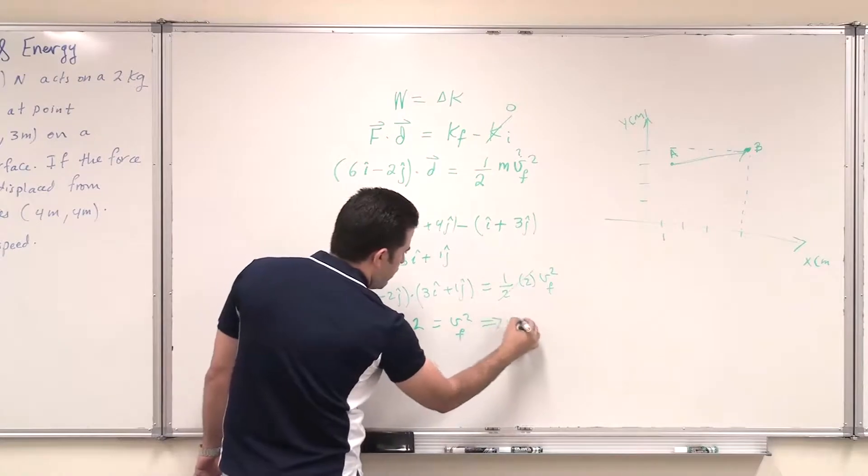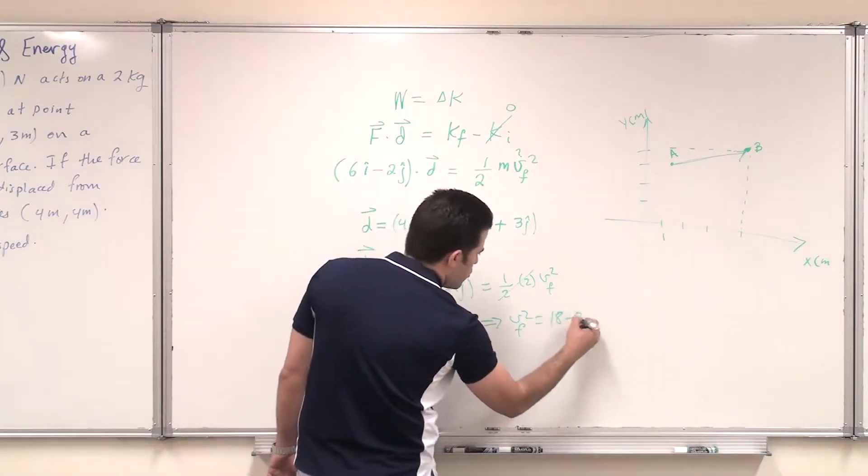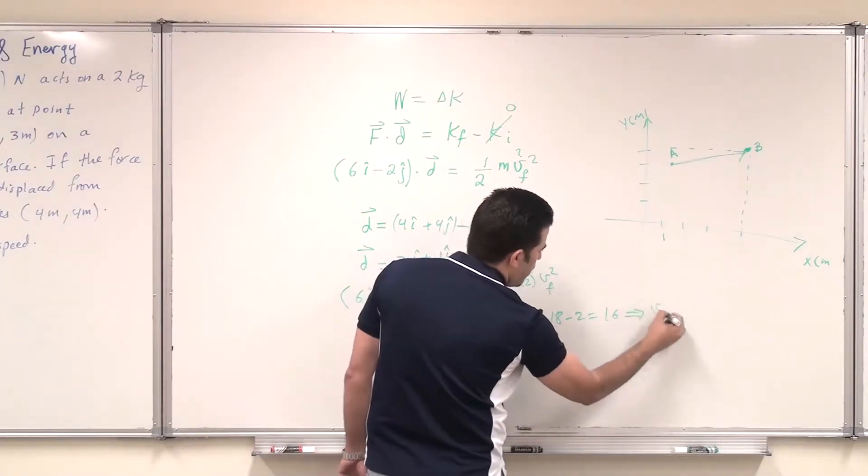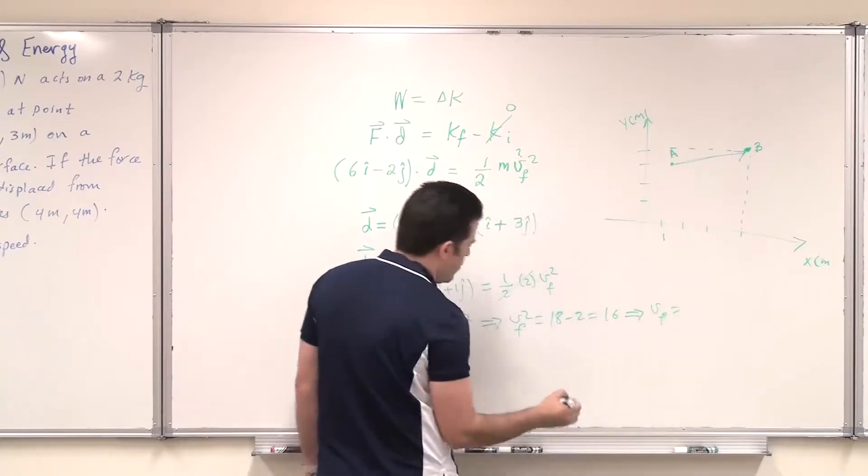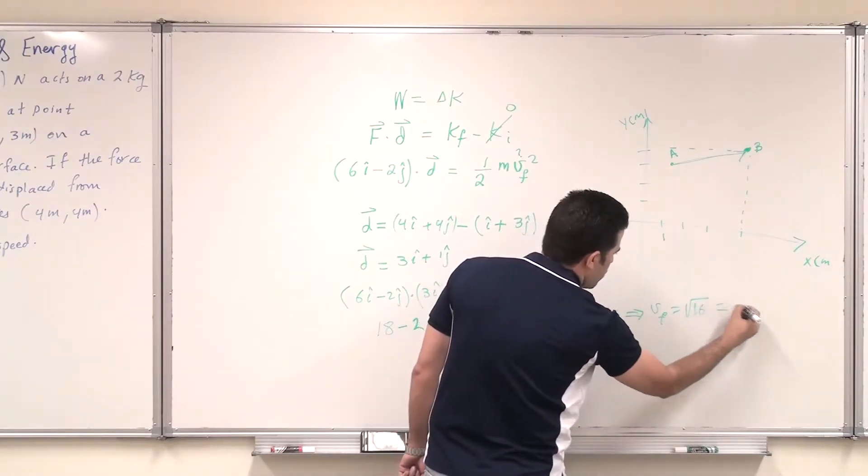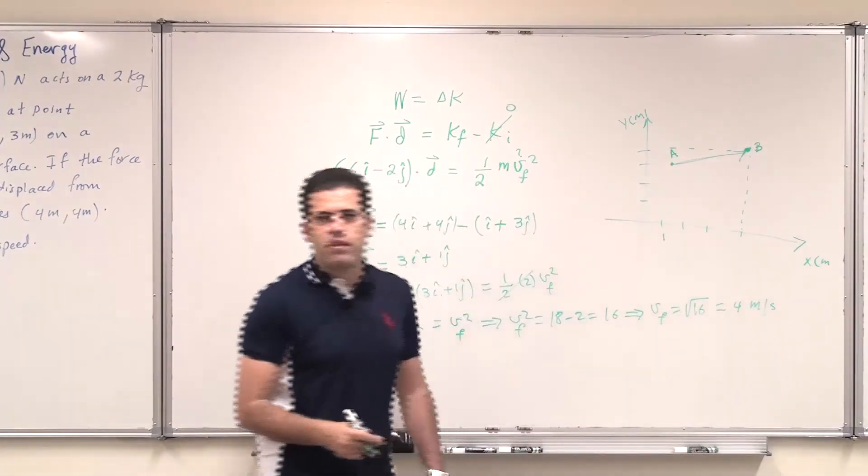So this will give that v final squared should equal 18 minus 2, which is 16, which will yield that v final, the final block speed, is the square root of 16, which is 4 meters per second. Thank you.